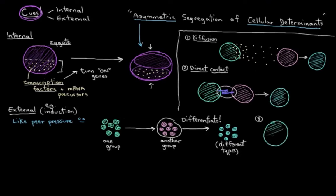Or you could have signals pass through gap junctions, which are little connections, or actually I should say connexons, between cells that are connected. And that could induce this cell to specialize, this cell over here.